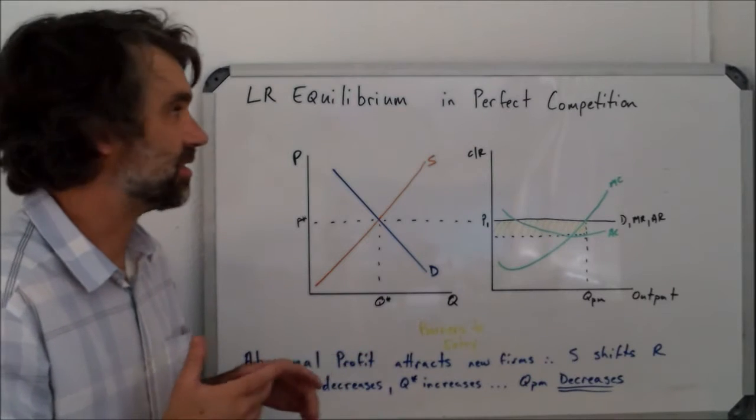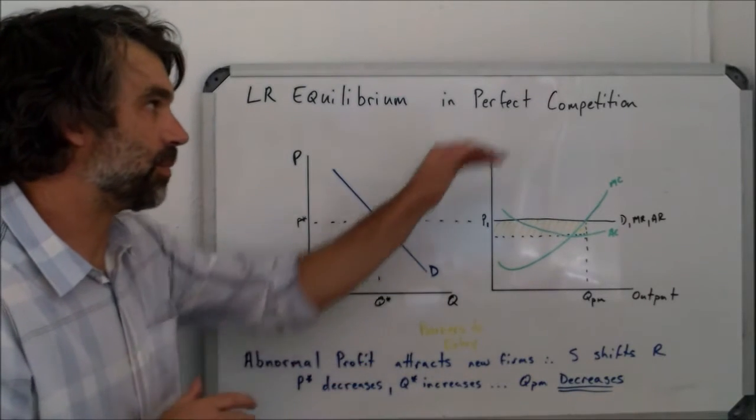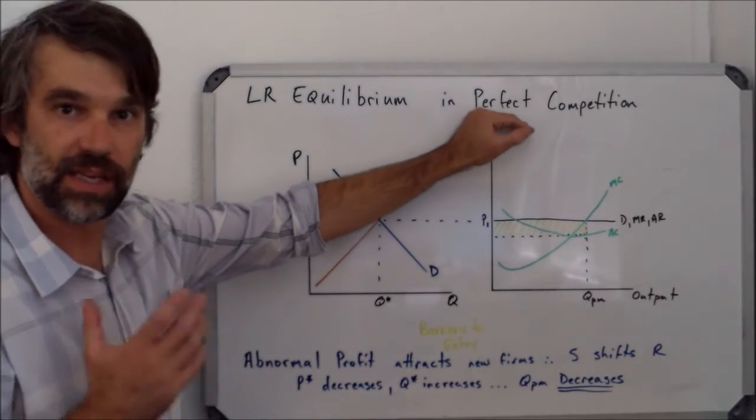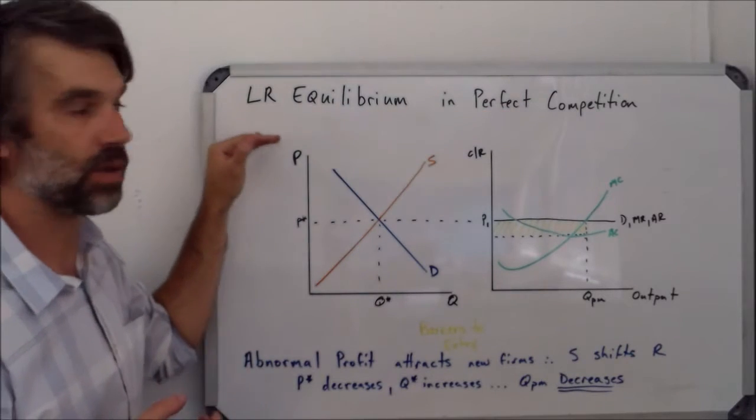The topic we're looking at today is trying to see why a perfect competition will always end up in what we call long-run equilibrium.